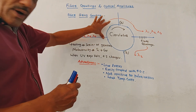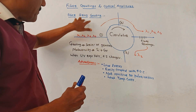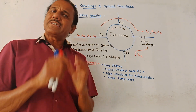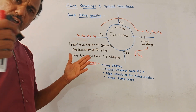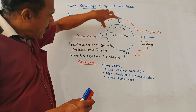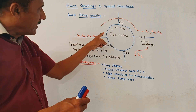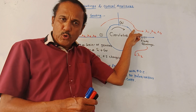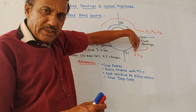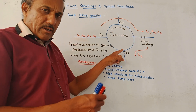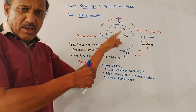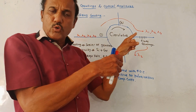Now we will discuss fiber Bragg grating. As shown in this diagram, this is the basic structure of a circulator, which we have studied in earlier videos. If you apply input to port 1, the signal passes to port 2. If you apply input to port 2, it passes to port 3. And if you apply input to port 3, it passes to port 1. This is how the circulator works.